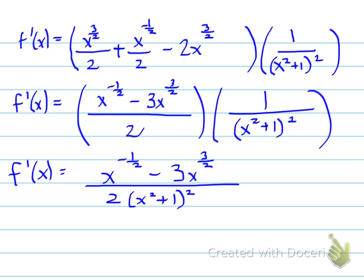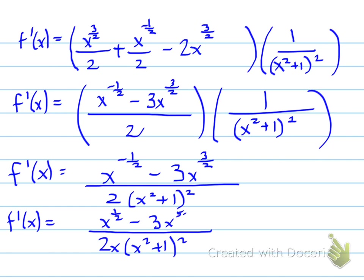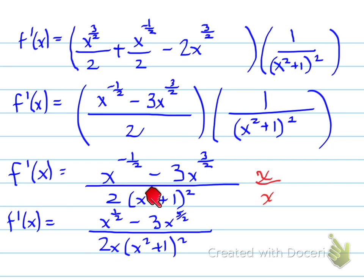We have x to the negative 1 half at the front, and you may be asked to eliminate negative exponents. To do that, multiply both the numerator and denominator by x to the power of 1. When we do that, x times x to the negative 1 half gives x to the 1 half, and x times 3x to the 3 halves gives 3x to the 5 halves. The bottom becomes 2x times the bracket x squared plus 1, all squared — eliminating the negative exponent.